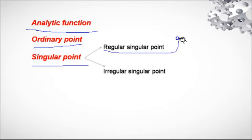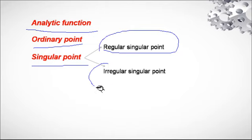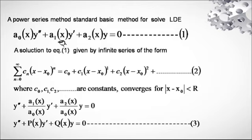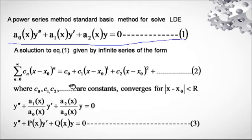Two types of singular points are there: regular singular point and irregular singular point. The general standard form of a linear differential equation is a₀(x)y'' + a₁(x)y' + a₂(x)y = 0. We are solving this differential equation in infinite series, that is summation from n=0 to infinity of cₙ(x − x₀)ⁿ.